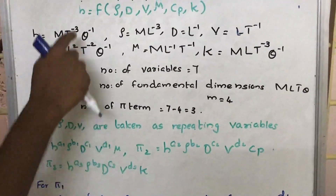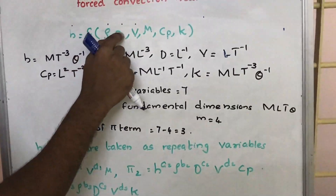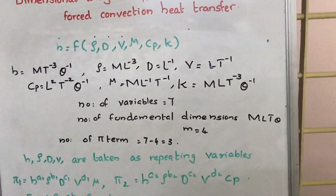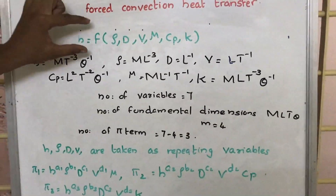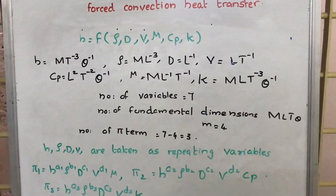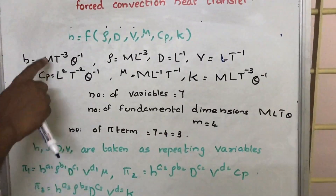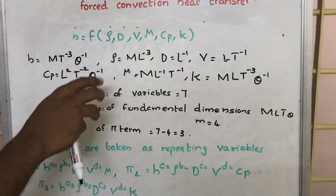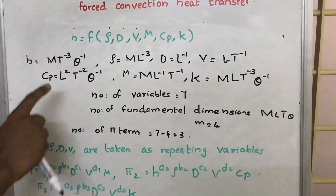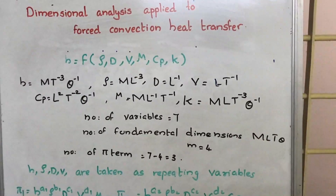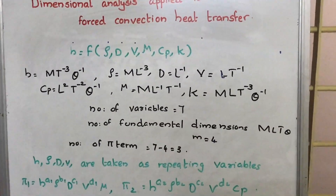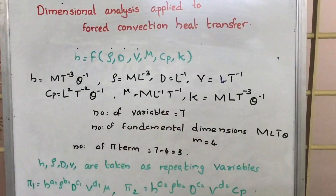The number of variables are 7. Here, F is not a variable — it denotes the function. So there are 7 variables and the fundamental dimensions used are M, L, T, and theta. Although there are 7 fundamental dimensions in total, only 4 are being used here: M, L, T, and theta. So the number of fundamental dimensions is 4.